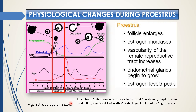In proestrus, normally the follicle enlarges. The most important hormone, estrogen, which acts on the uterus, increases. Because of the action of estrogen, the vascularity, morphology, and physiology of the uterus will change. Endometrial glands begin to grow, and estrogen level will be at its highest before the transition to the estrus phase.